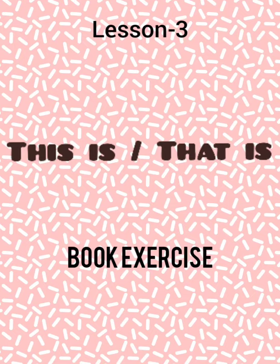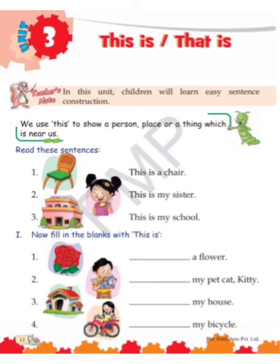Good morning children, today we will be doing exercises of lesson number three of English grammar. Let's start. As you already know, we use 'this is' when there is only one object — that is, a thing, person, or place — which is near to us. Then we use 'this is'.